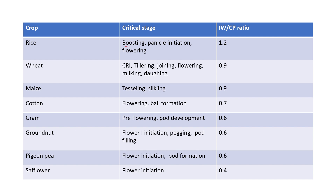The first crop in the table is rice. Its critical stages are booting, panicle initiation, and flowering. Its IW/CPE ratio is 1.2. The second crop is wheat. Its critical stages are CRI (crown root initiation stage), tillering, jointing, flowering, milking, and dough stage. Its IW/CPE ratio is 0.9.